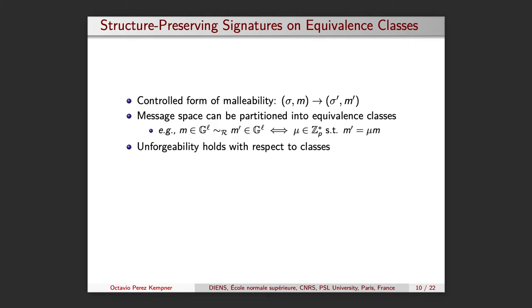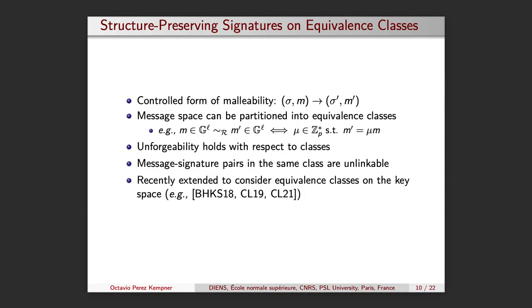Besides the notion of unforgeability, these types of signatures should also be unlinkable. If the equivalent relation provides indistinguishability on the message space, like in the previous example, and updated signatures are distributed like fresh signatures, message-signature pairs falling into the same class are said to be unlinkable.